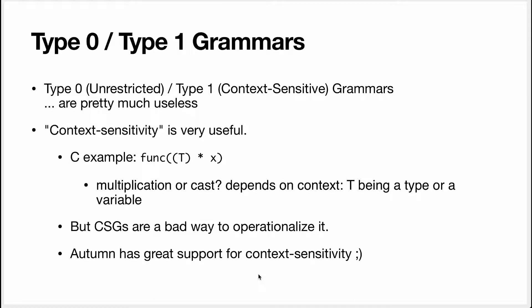What about type 0 and type 1 grammars? Pretty much they're useless. I don't know any use for them either in computer science or in linguistics. However, the concept of context sensitivity, that's very useful. I'll give you just one example using the C programming language. Imagine you have this in C, which is a function call with a single parameter. Is this the multiplication of x by t? Or is this an access to pointer x casted to type t? The interpretation of that will depend on whether t has been defined as a type or as an identifier. So that's the context.